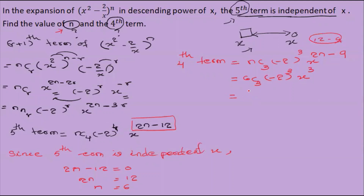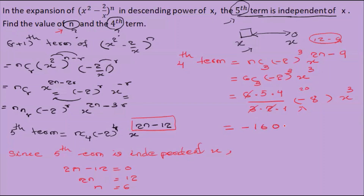6C3 equals 6 times 5 times 4, divided by 3 times 2 times 1, which gives 20. Then multiplied by (minus 2) to the power 3 equals minus 8. And x squared. This equals minus 160 x squared.